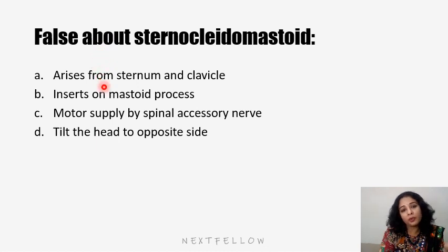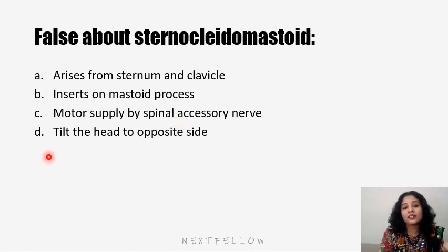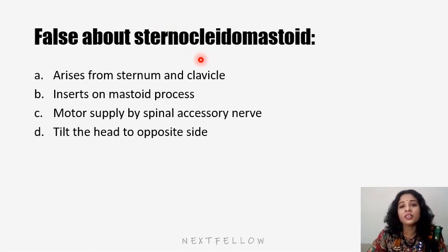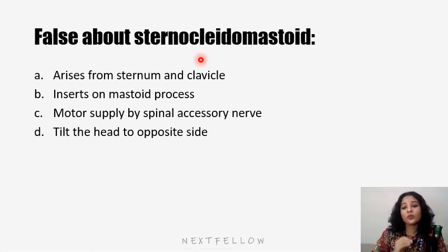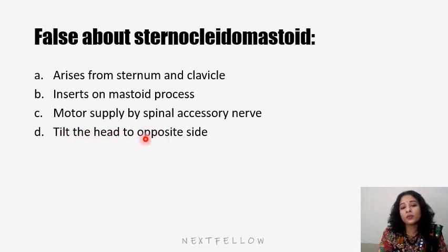What is false about the sternocleidomastoid? It arises from sternum and clavicle and inserts into the mastoid process — true. Motor supply by spinal accessory — also true. The false statement is that it tilts the head towards the opposite side. The correct action is: it tilts the head towards the same side and turns the chin towards the opposite side.